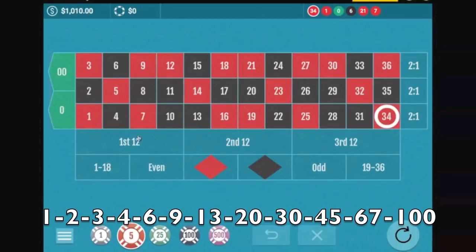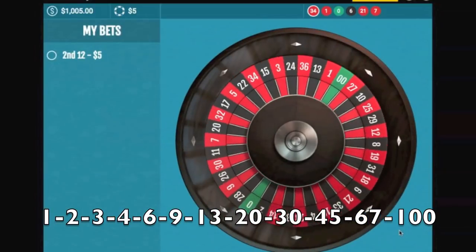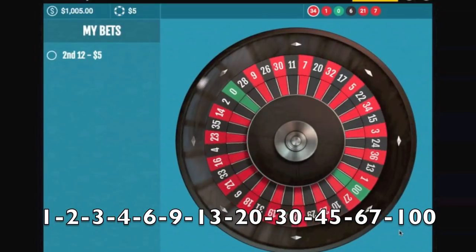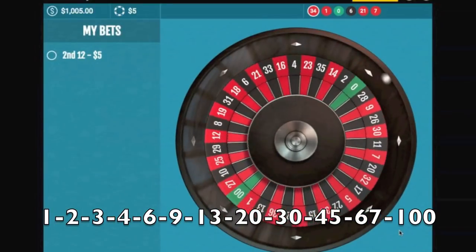We'll put five dollars on the middle dozen and start the whole sequence over again. Now that you have a winning, you start back at the beginning: one unit. If you lose, then you go to the next number, so the next number being two, we're going to go back to our ten dollar bet.